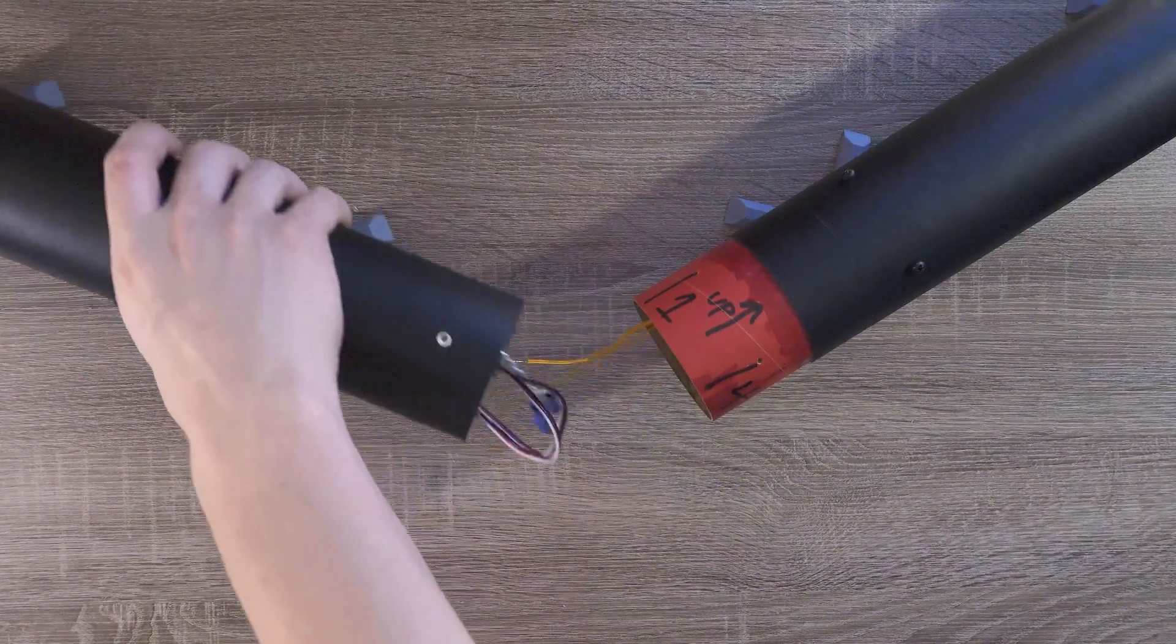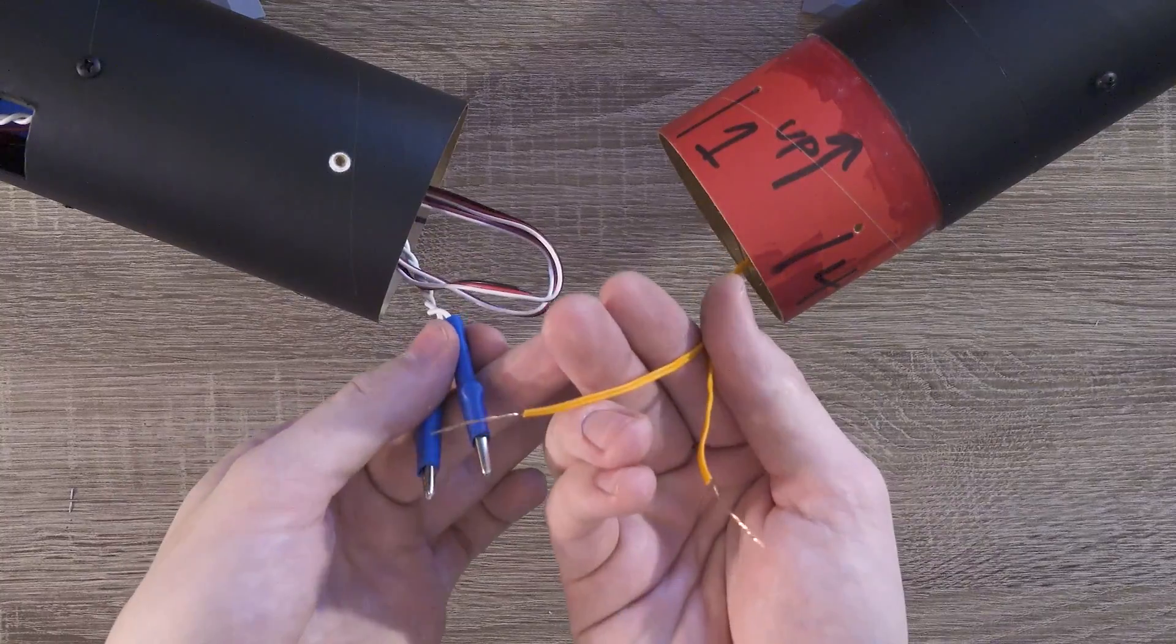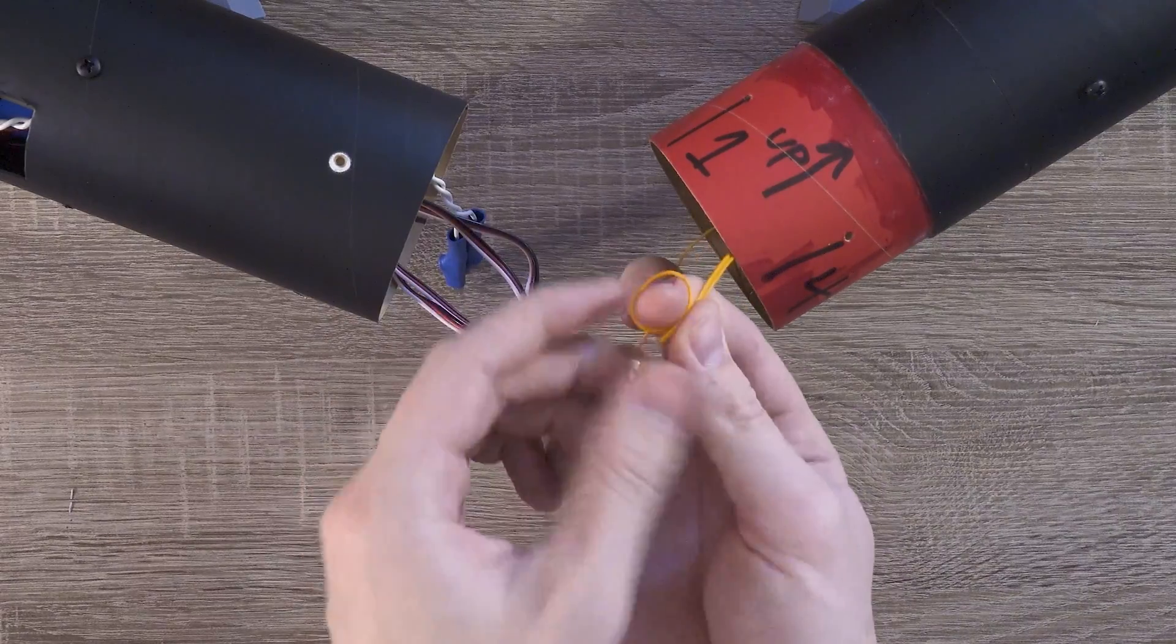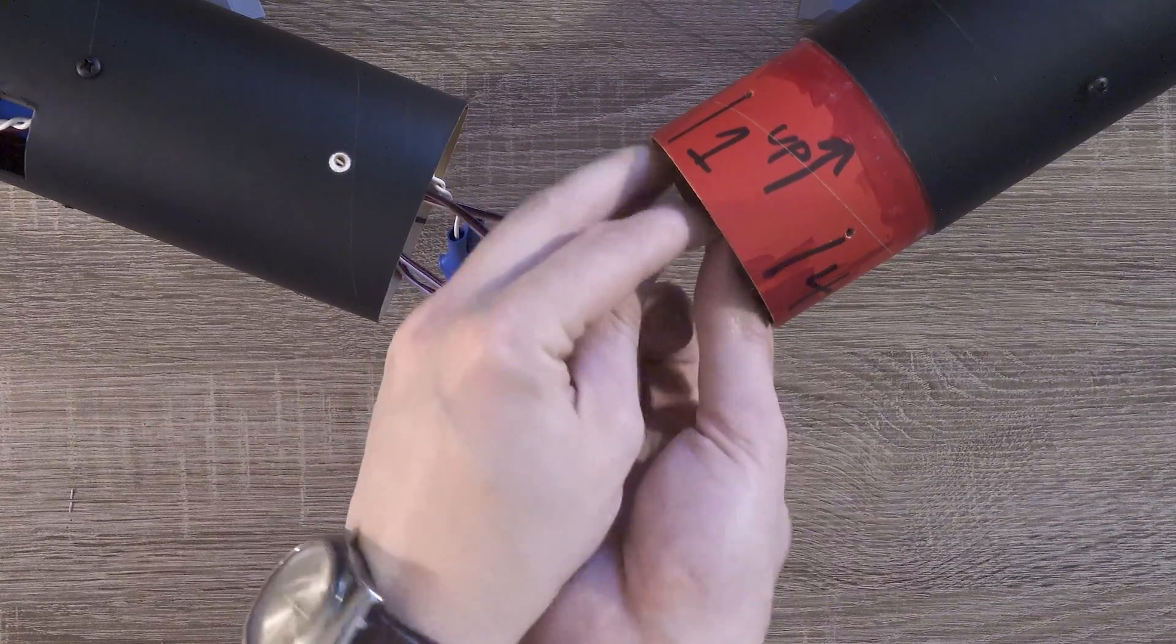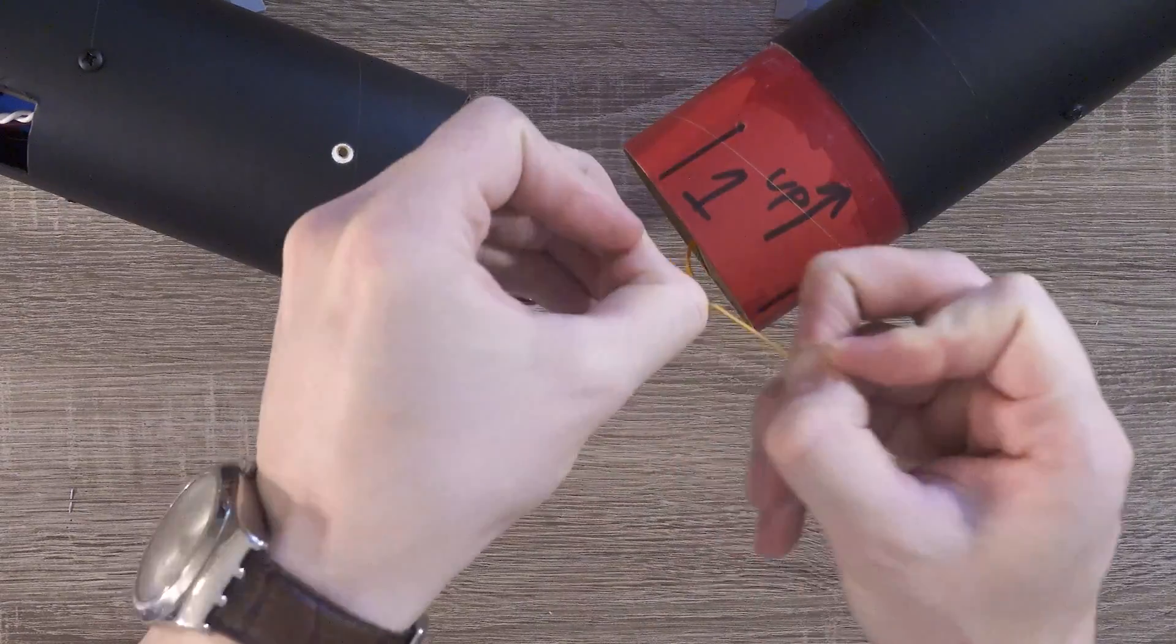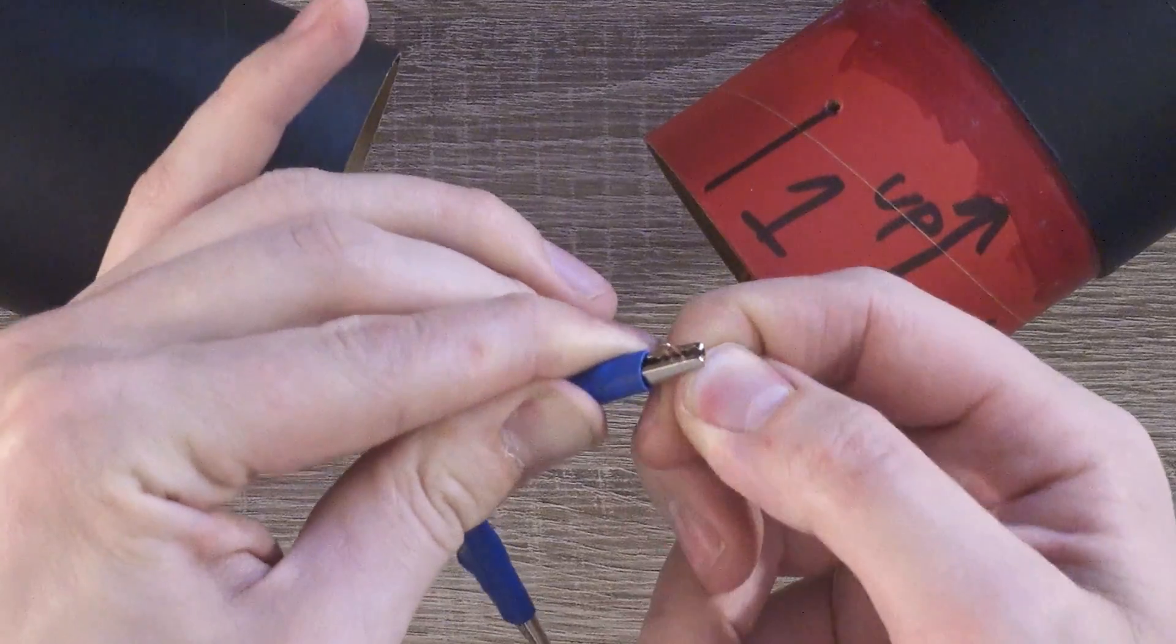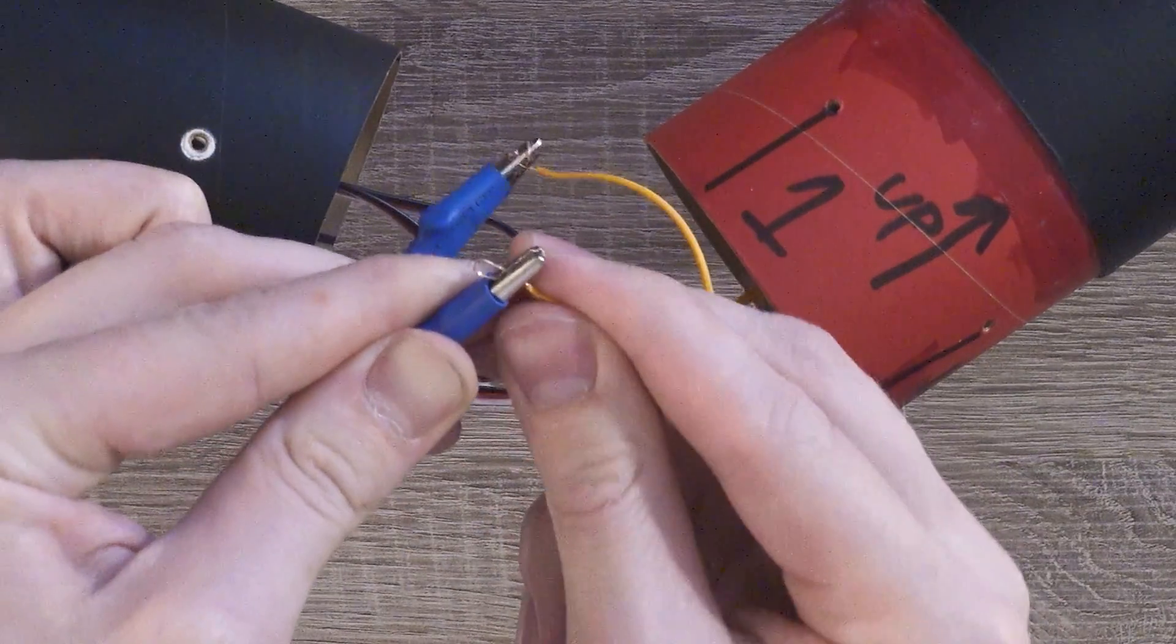With the parachutes packed, it's time to wire them up. We have two charges ready to go, but we only need one. I'll fold this one up and pack it away for later flights. We'll separate the leads on the main charge, and then connect them to the alligator clips that are connected to pyro channel 1.